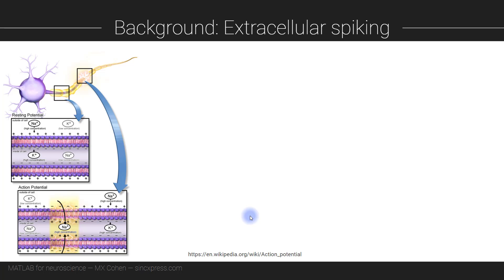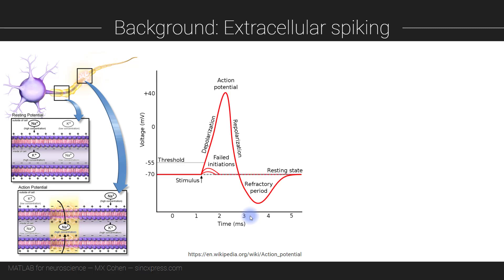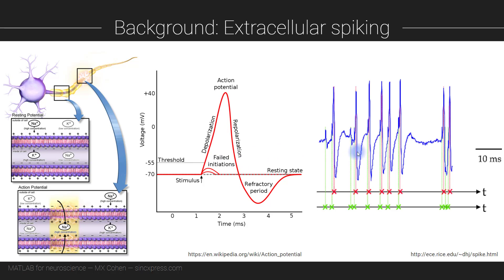As you know, neurons communicate with each other through electrochemical signaling, and when a neuron receives a sufficient amount of excitation it emits what's called an action potential, which is a rapid depolarization and then repolarization of the cell. You see a diagram of this depicted here — this is the membrane voltage potential over time. Here you can see some actual empirical voltage traces with action potentials as these sharp spiky events. From the timescale you can see that action potentials are pretty fast — they last only a few milliseconds.